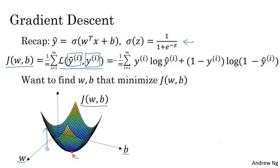What we want to do is really find the value of W and B that corresponds to the minimum of the cost function J. It turns out that this particular cost function J is a convex function, so it's just a single big bowl. This is a convex function, and this is as opposed to functions that are non-convex and have lots of different local optima.